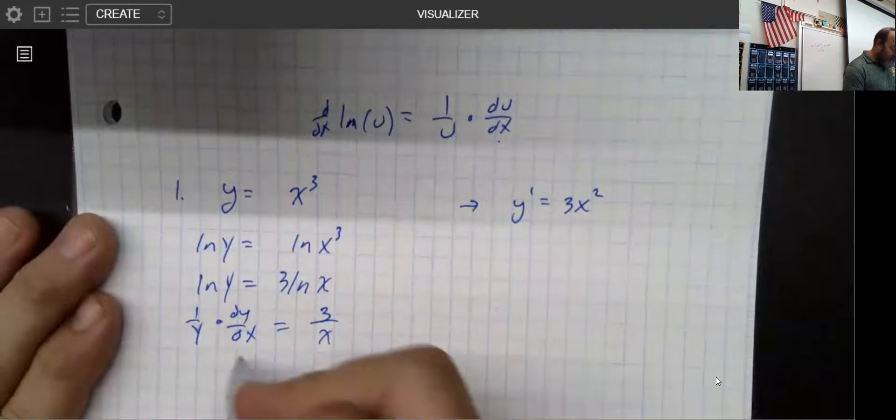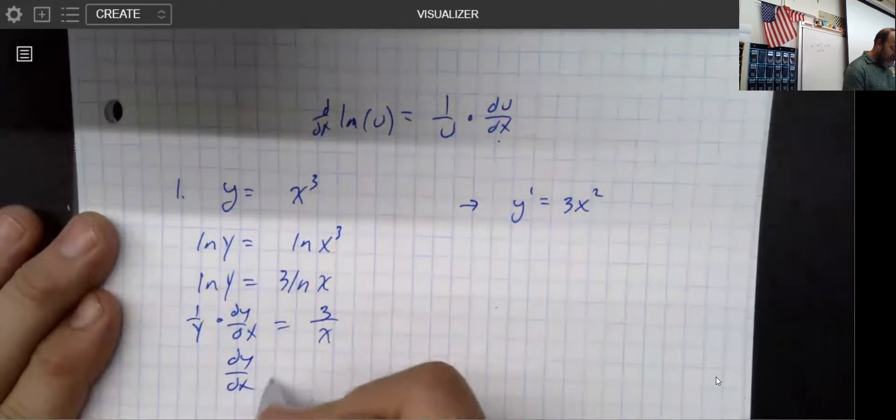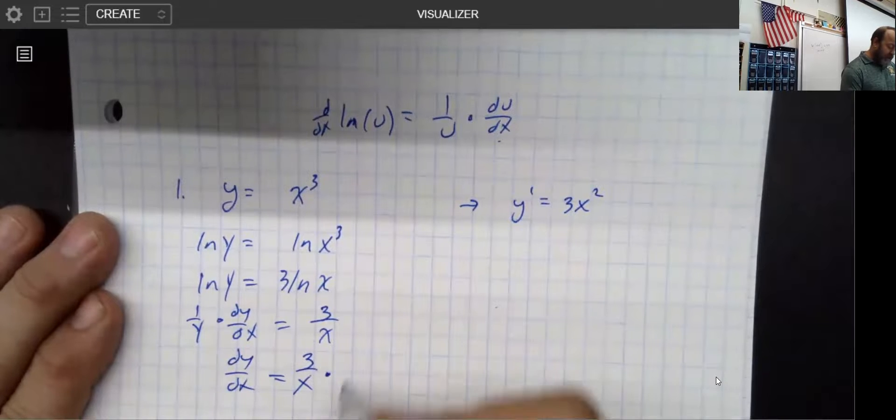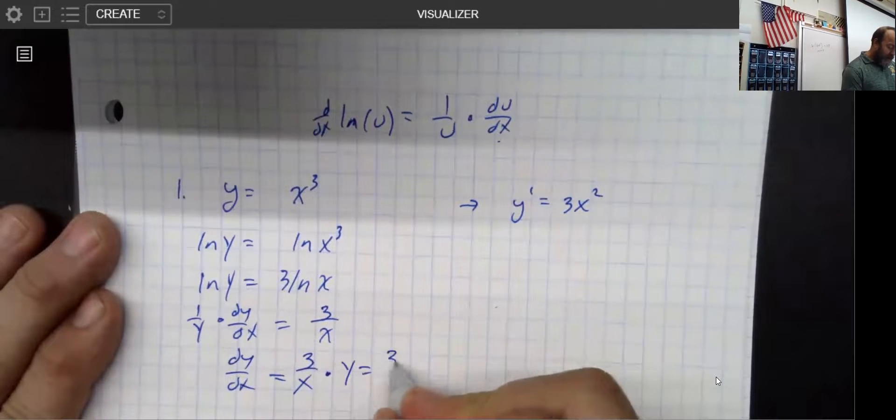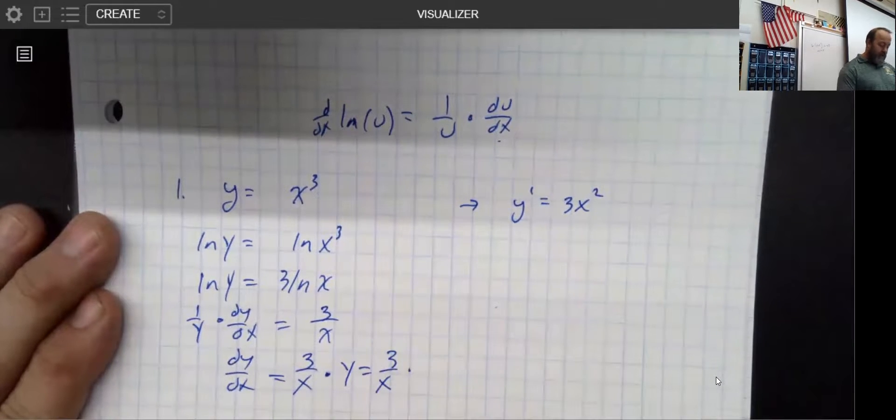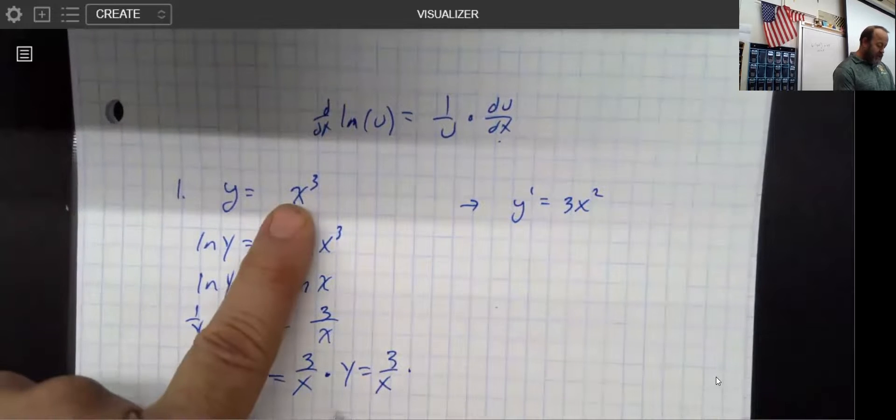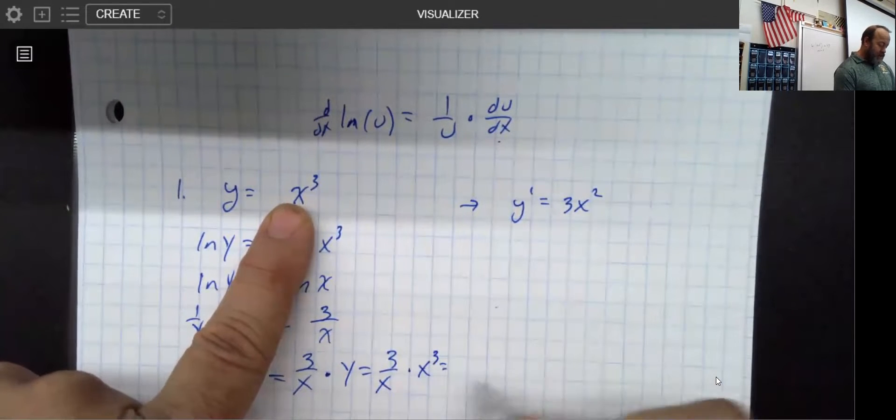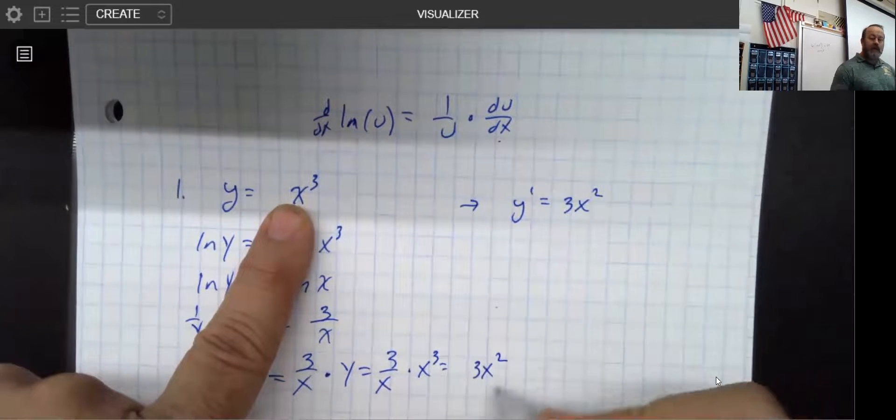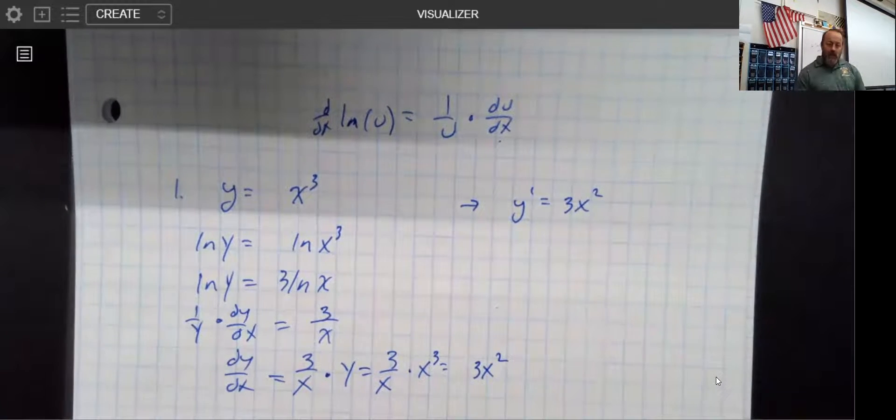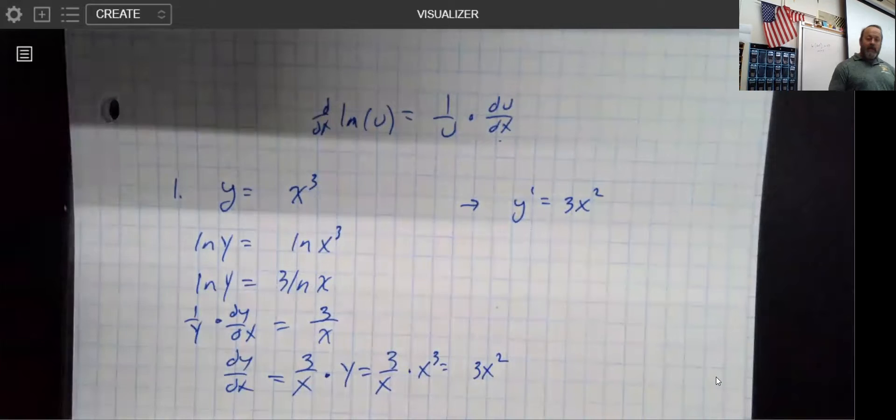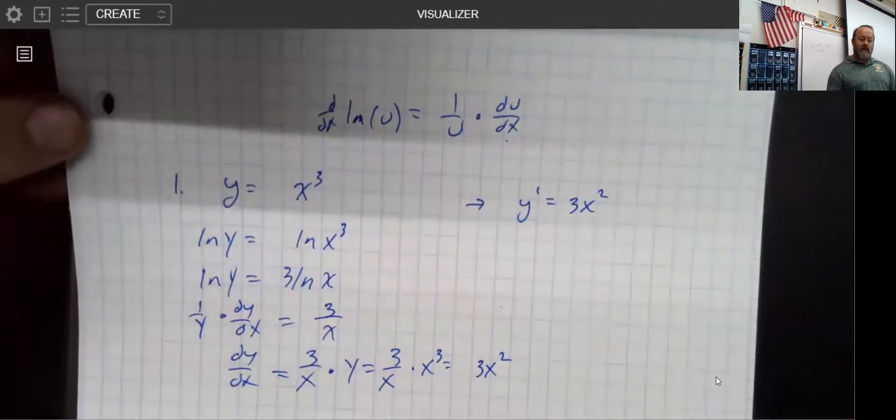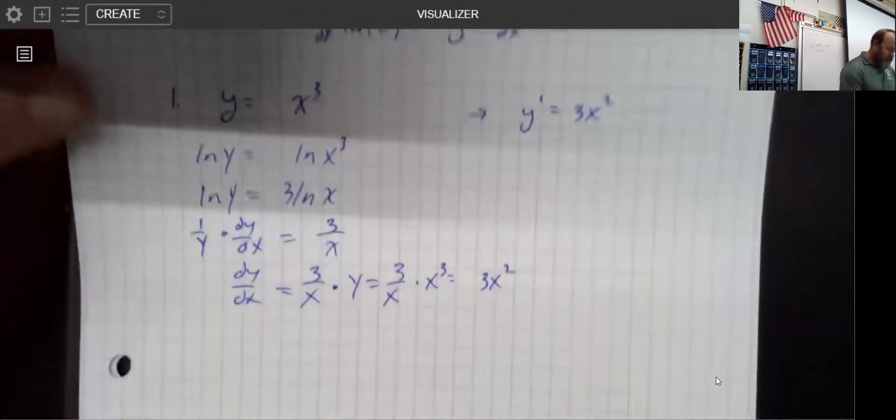So now if I wanted to get dy dx by itself, all I need to do is take this 3 over x that I have right there and multiply both sides by y. But looking back to the original problem, we know that y is x cubed. And so x goes into x cubed two times, so that would be 3x to the second. That was a much longer way to solve a fairly simple problem, but it validates our process.